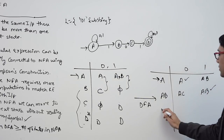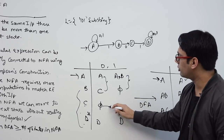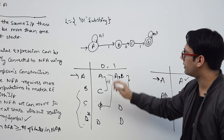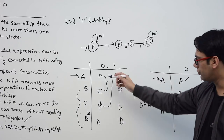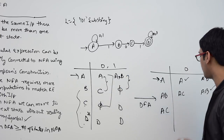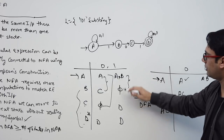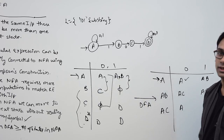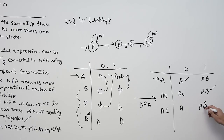We have not yet defined state AC. For state AC, take the union of transitions from A and C. On 0, the union of A's transition (A) and C's transition (phi) gives A. On 1, the union of AB and D gives ABD.